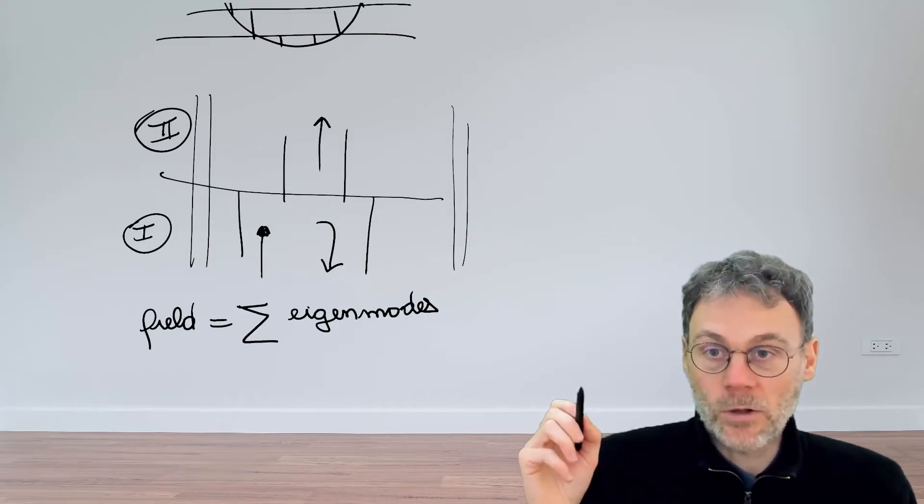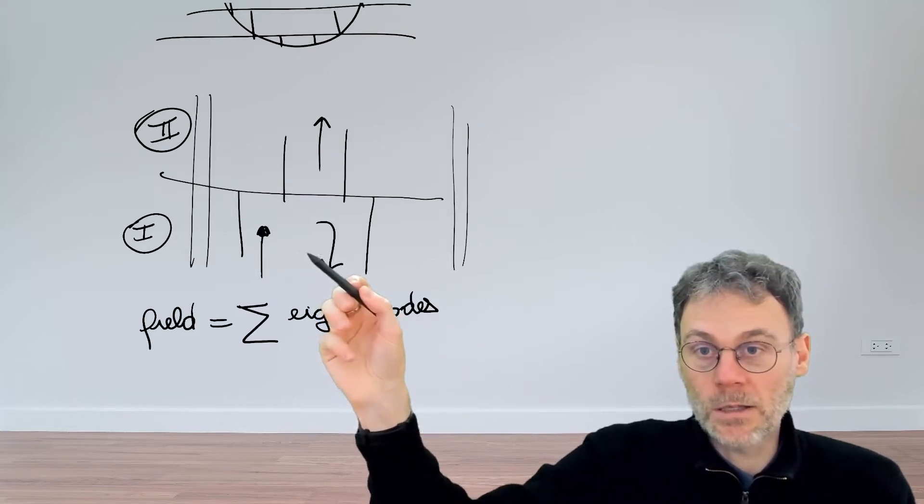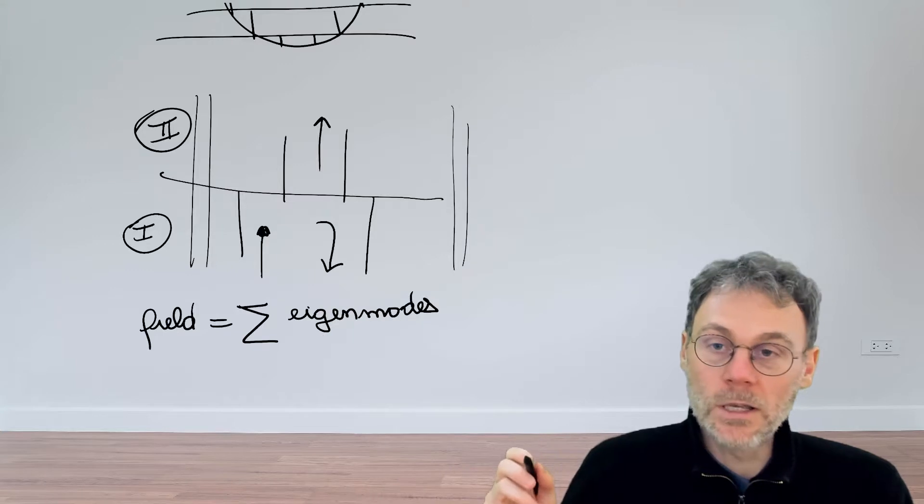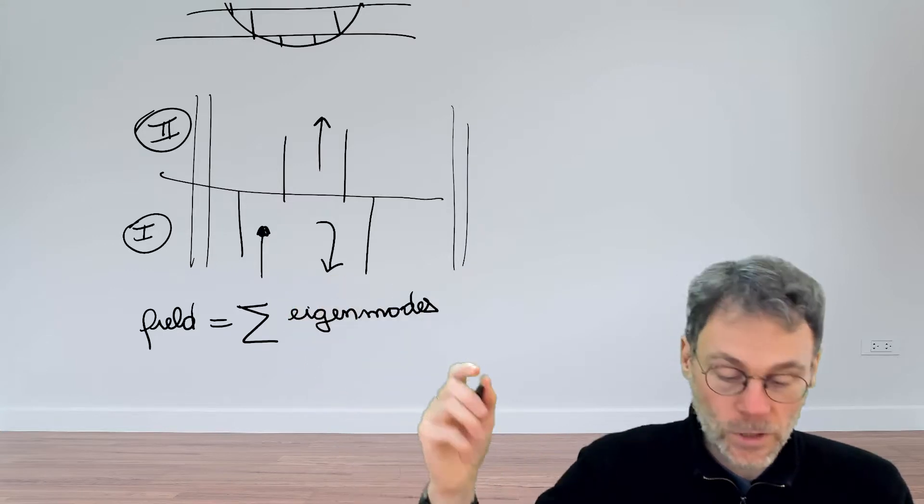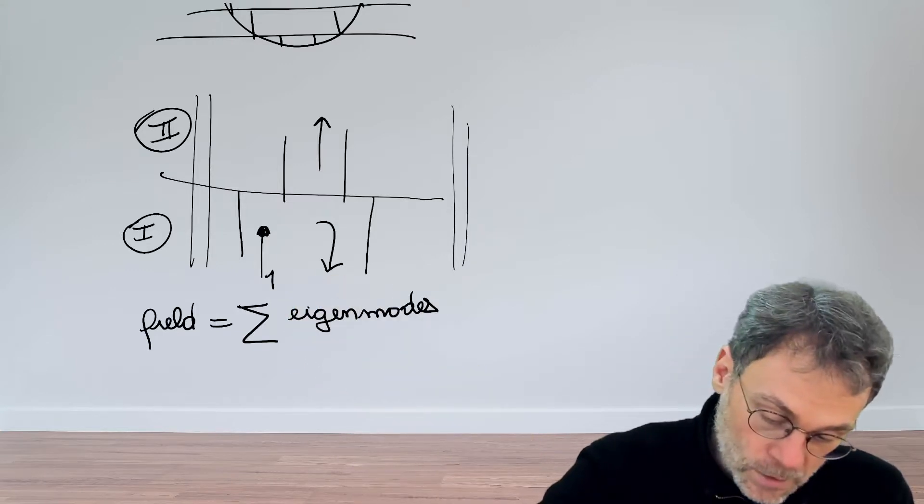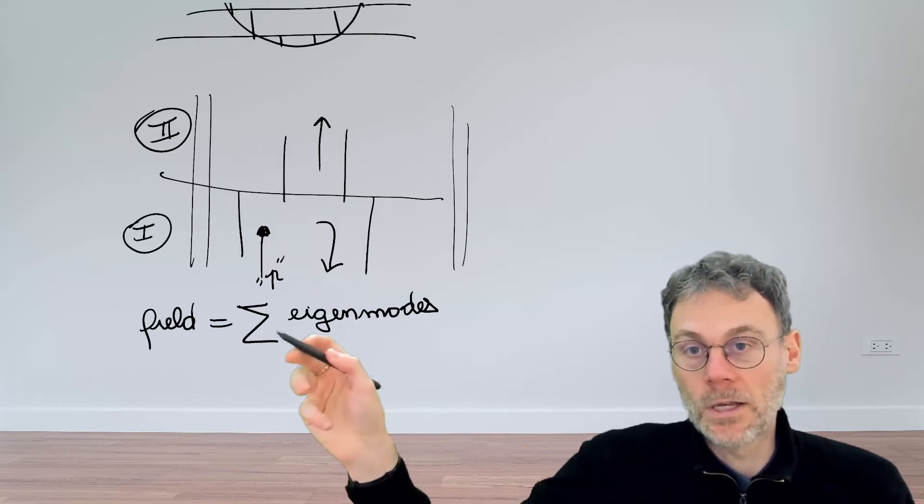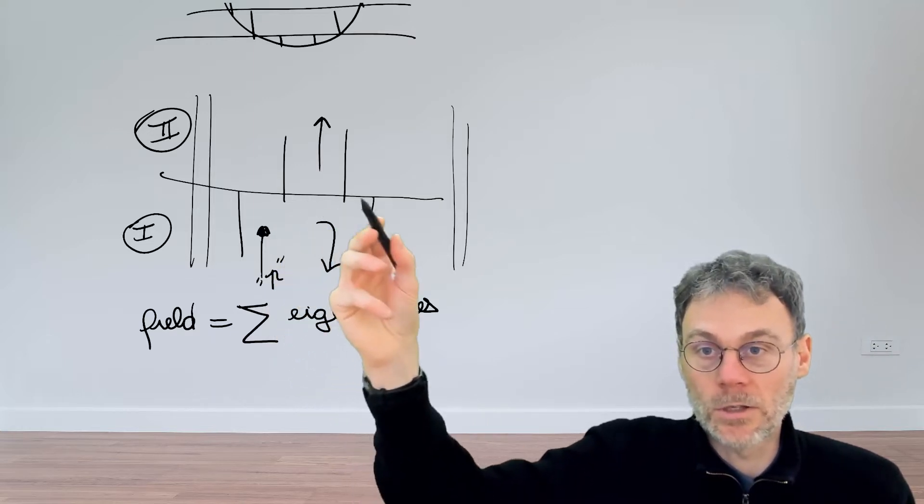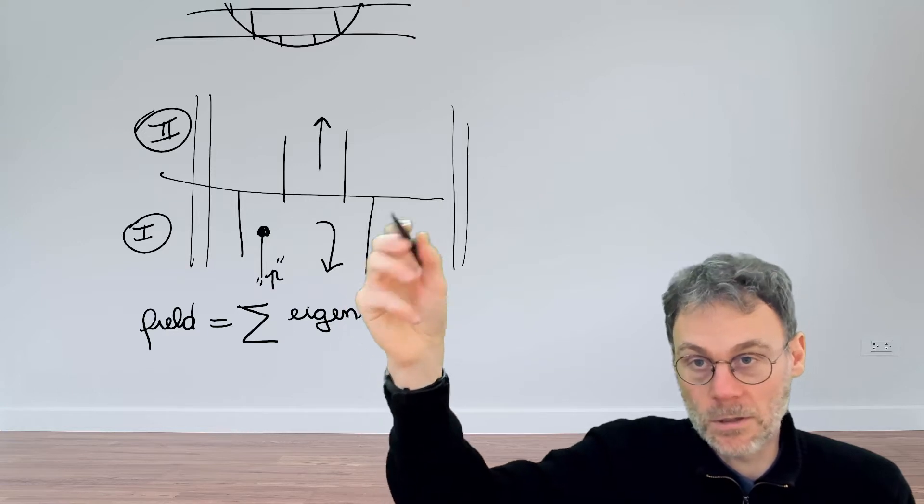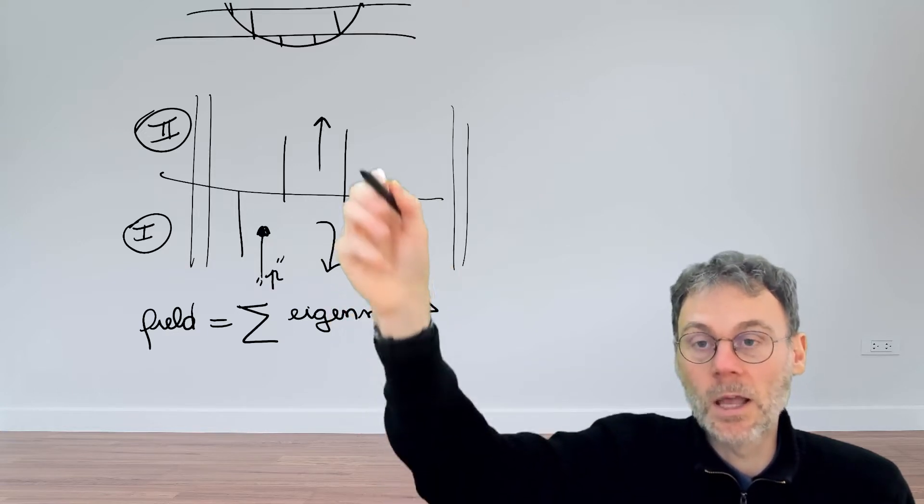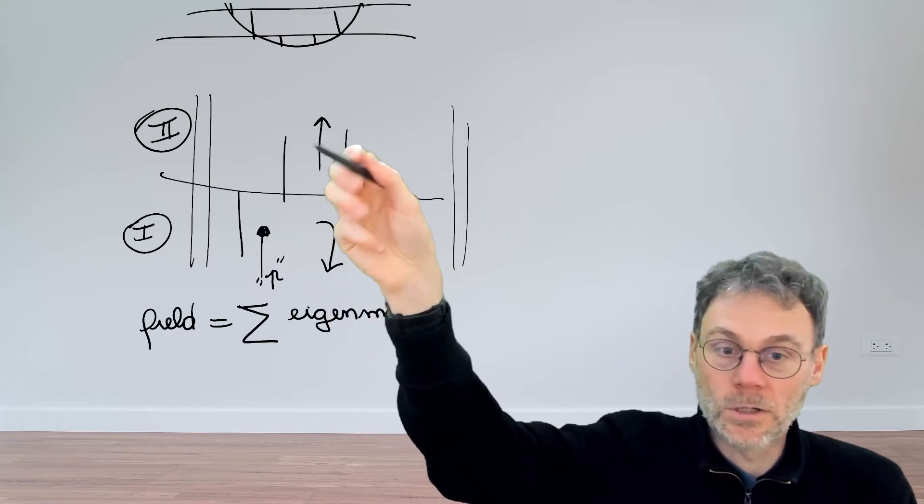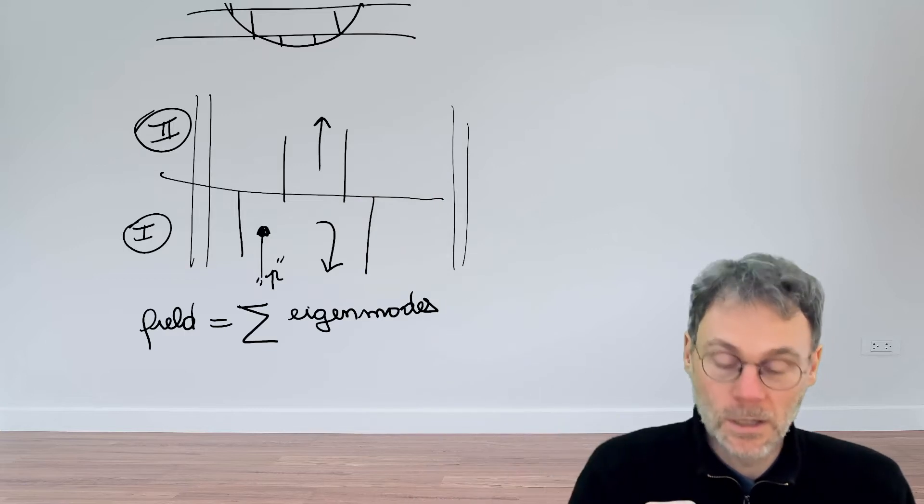Okay, so what we're going to do next is figuring out what happens if we excite an interface like this with only a single Eigenmode of that first layer. So let's say we excite this with an Eigenmode with index p, so a single Eigenmode, and then that results in a certain reflected field which is a sum of Eigenmodes in layer 1 and a certain transmitted field which is a sum of Eigenmodes in layer 2.